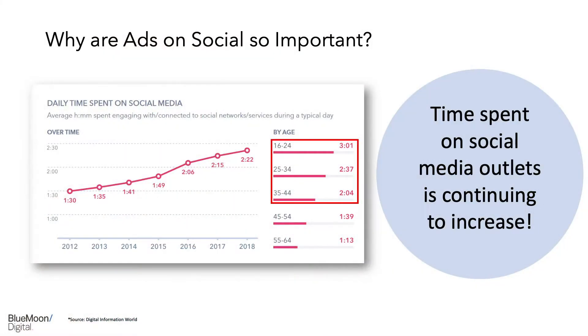I want to talk a little bit about user engagement on social media apps. Users 18 to 44 are spending on average over two hours per day on social networks. That is imperative to why you should be in front of them while they're spending time on these apps — they're there a lot and that time is only increasing.